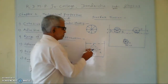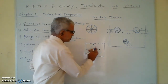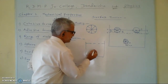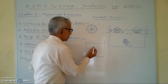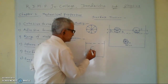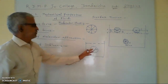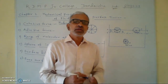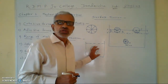If you draw a sphere where the center of the sphere is a molecule and the radius of the sphere is the range of molecular attraction, then that sphere is called the sphere of influence.